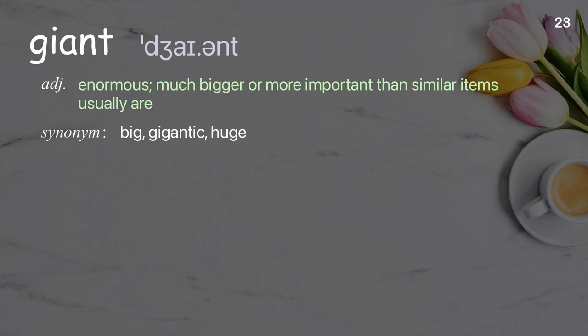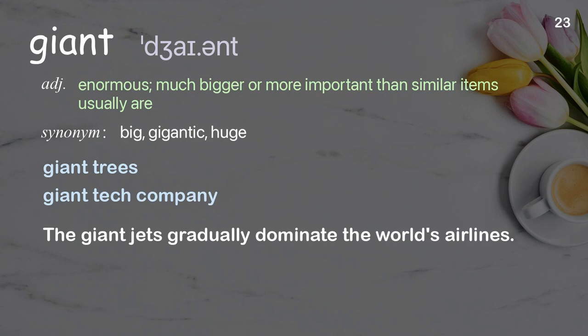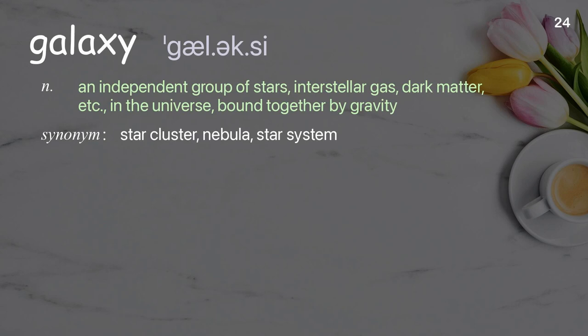Giant: Extremely big; much bigger or more important than similar items usually are. Examples: Giant trees, Giant tech company. The giant jets that gradually dominate the world's airlines.